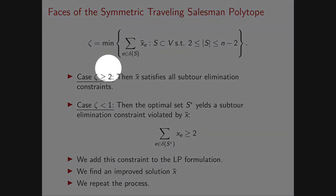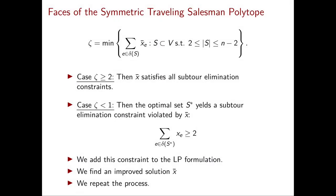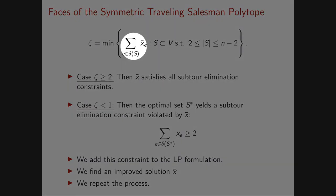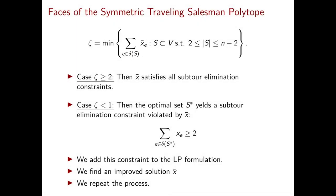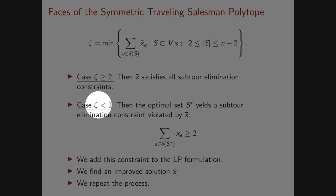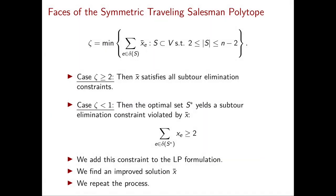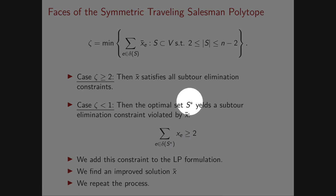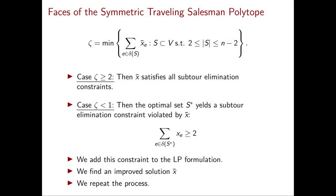We want to understand if the optimal value ζ is greater than or equal to 2 or not. If ζ ≥ 2, then for every set S the sum is at least 2, so x̄ satisfies all subtour elimination constraints. On the other hand, if ζ is strictly smaller than 2, then there is at least one violated constraint, and the optimal set S* in this minimization problem gives one such violated constraint, which we can add to the LP formulation to obtain a stronger relaxation at the next iteration.